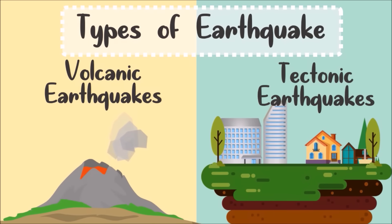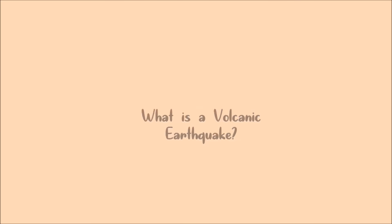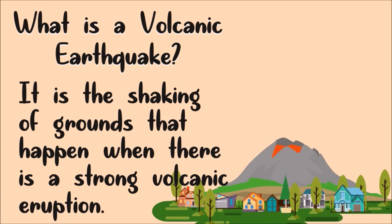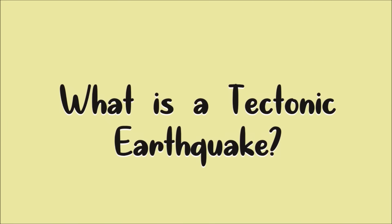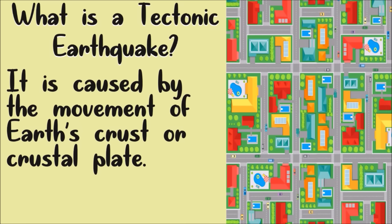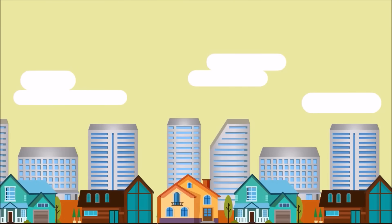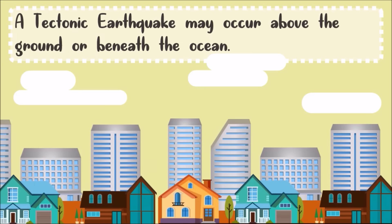These are also the reasons why we experience earthquakes. A volcanic earthquake is the shaking of the ground that happens when there is a strong volcanic eruption. On the other hand, a tectonic earthquake is caused by the movement of the Earth's crust or crustal plates. A tectonic earthquake may occur above the ground or beneath the oceans.